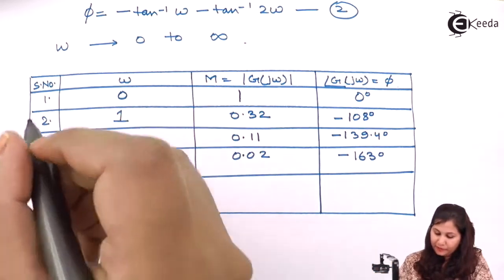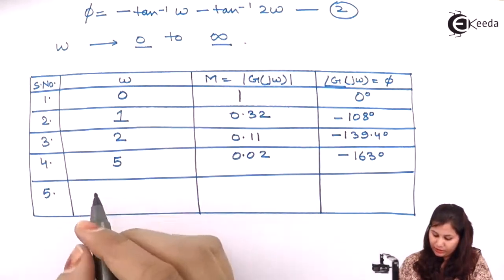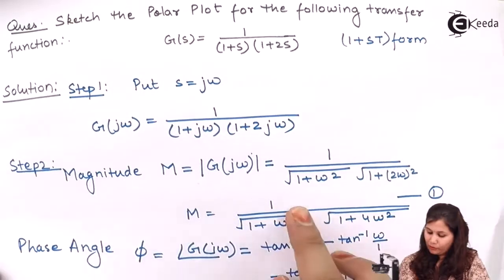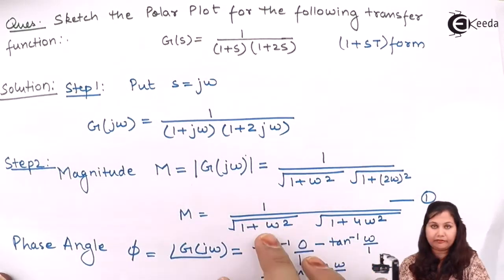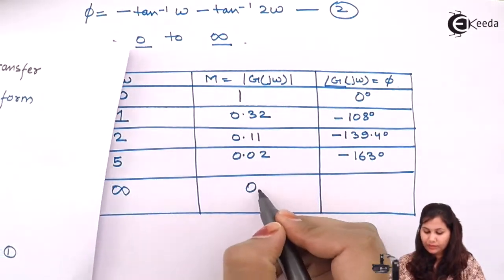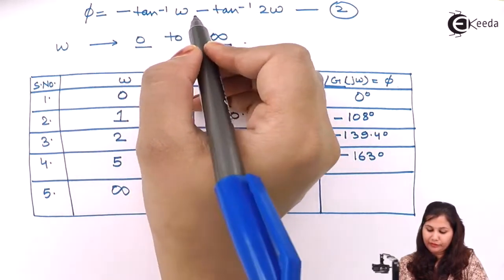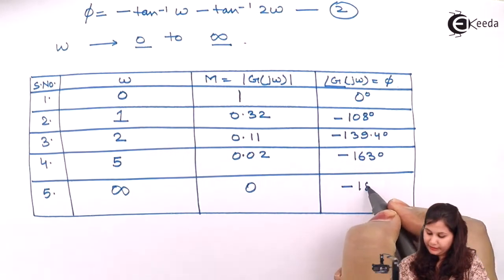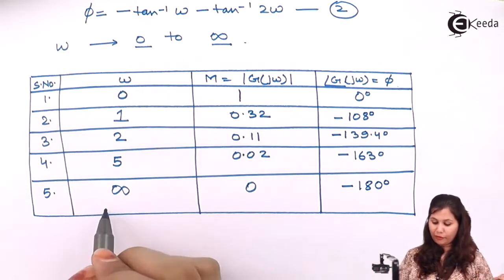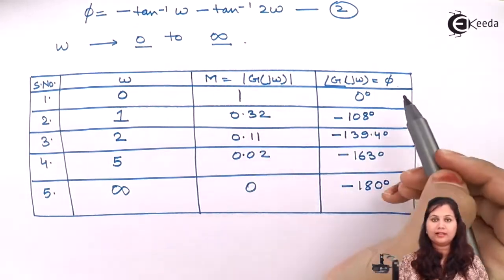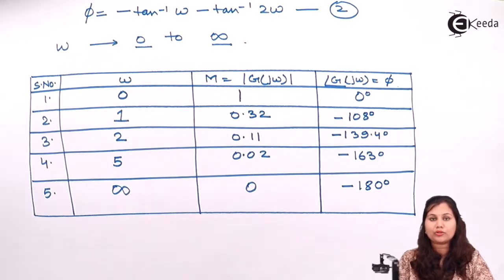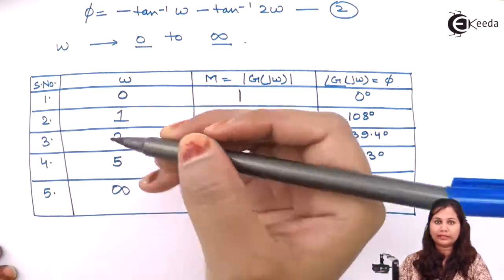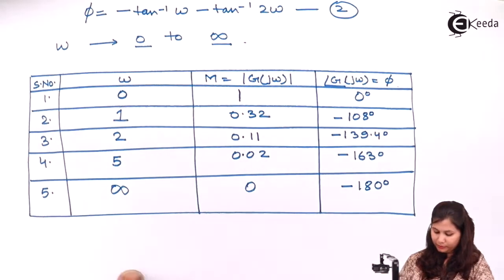Now take ω as infinity. The magnitude is 1/(√(1+∞) · √(1+∞)) = 1/∞ = 0. The phase angle is −tan⁻¹(∞) − tan⁻¹(∞) = −90° − 90° = −180 degrees. For various values of ω from 0 to infinity, we have calculated the magnitude and phase angle. Now let's plot the polar plot for this system.